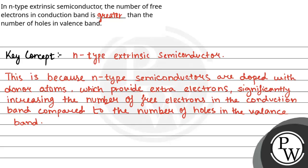And in a n-type extrinsic semiconductor, the number of free electrons in conduction band is greater than the number of holes in valence band. Okay, so hope you understood it well, all the best.